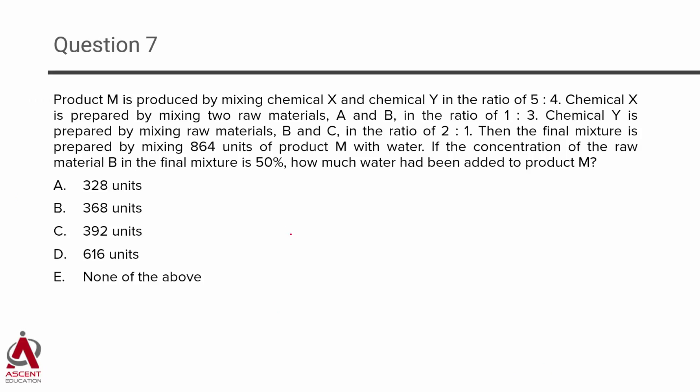Product M is produced by mixing chemicals X and Y. We'll just go through the flow and note these points down. M actually contains X and Y. Forget the ratio. We'll come to the ratios when we actually solve the question. Right now, we'll just jot down these points. But X and Y in turn are not independent chemicals. X comprises A and B. That's what they're saying. In some ratio, it comprises A and B.